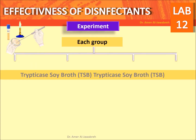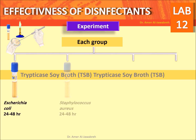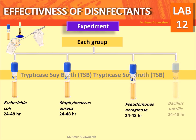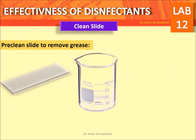Prepare a bacterial suspension by adding one 10-microlitre loopful of bacteria into 10 ml of broth. For each group, provide four trypticase soy broth tubes: the first containing Escherichia coli, the second containing Staphylococcus aureus, the third containing Pseudomonas aeruginosa, and the fourth containing Bacillus subtilis. Pre-clean slides to remove grease.